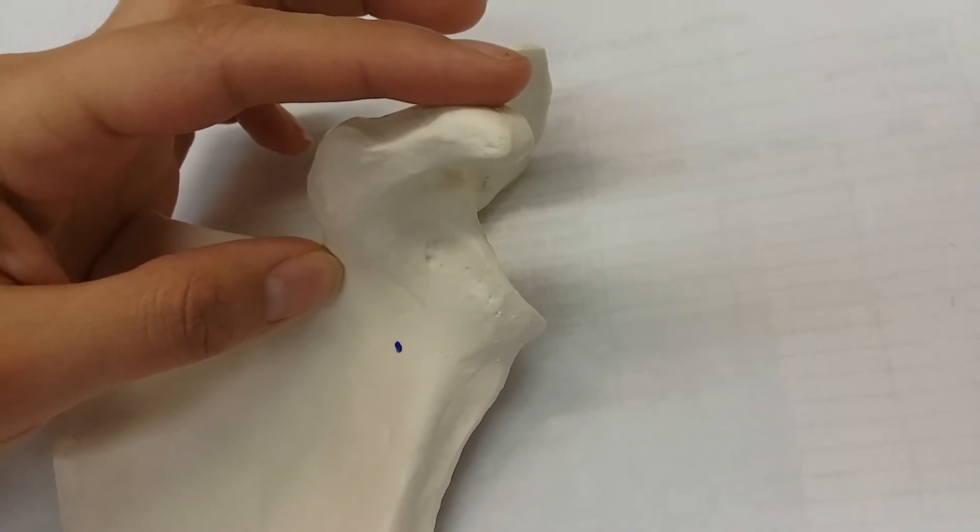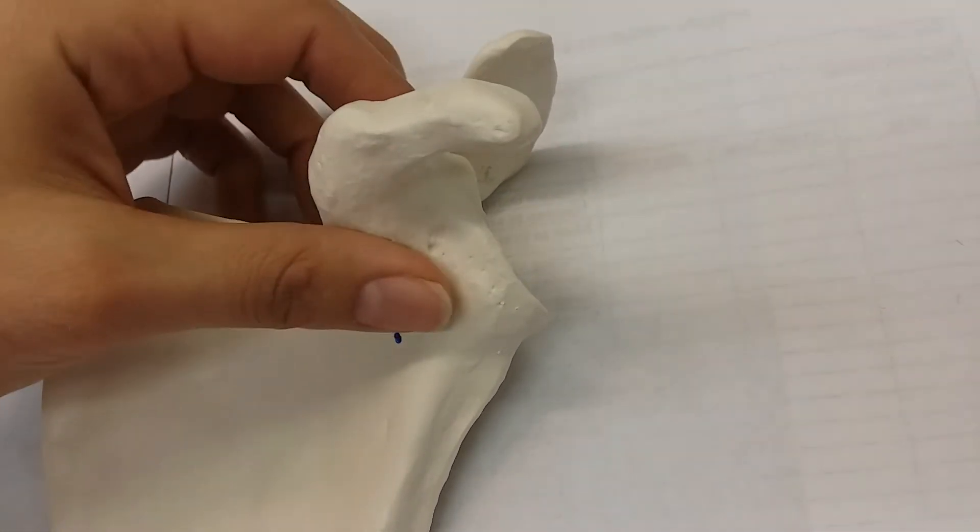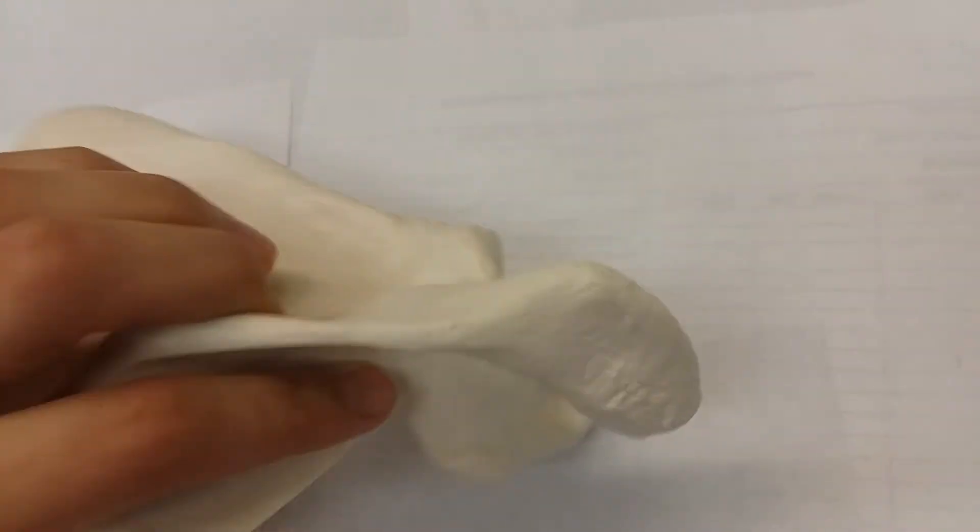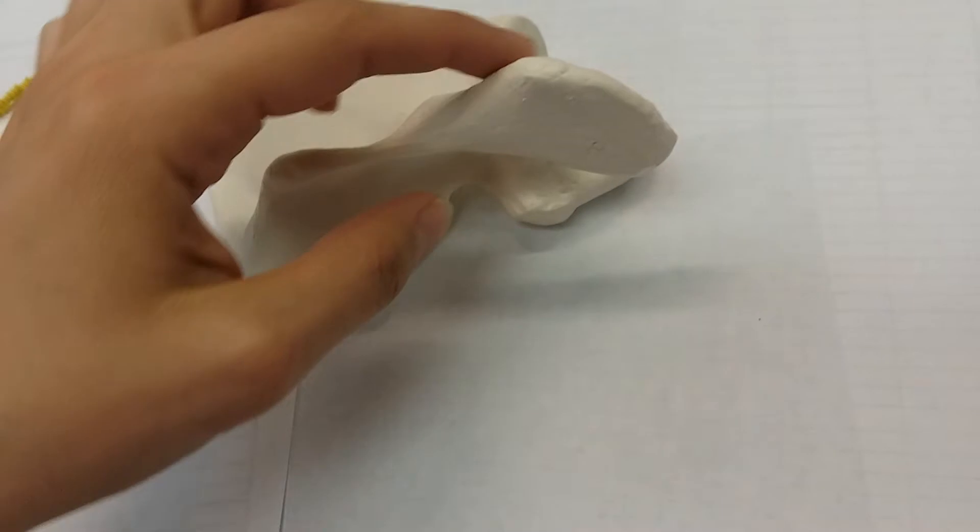Next you're going to have your acromion process. So your coracoid process is anterior. Posterior is going to be your acromion process. Your acromion process is this projection right here.